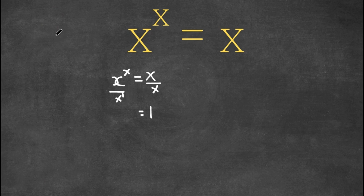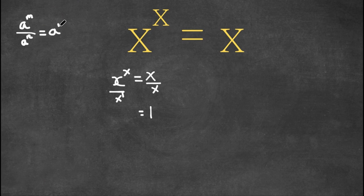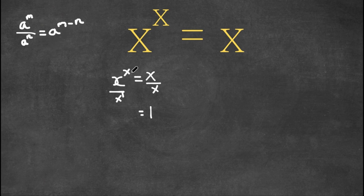If you recall an important property of exponents, it states that a to the power of m over a to the power of n is equal to a to the power of m minus n. So this is the formula for dividing exponents. Right here we have x to the power of x divided by x to the power of 1, where x is a, x is m, and 1 is n. So if we put our variables into this form, we get x to the power of x minus 1.